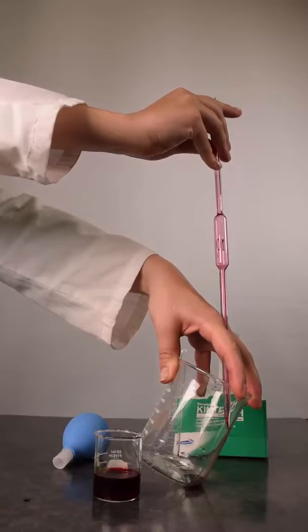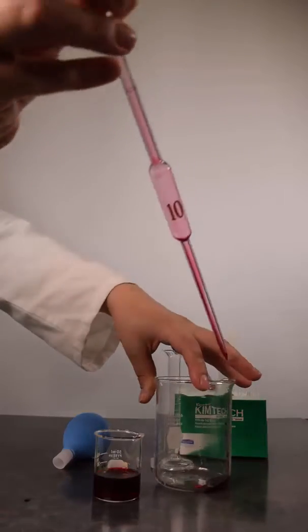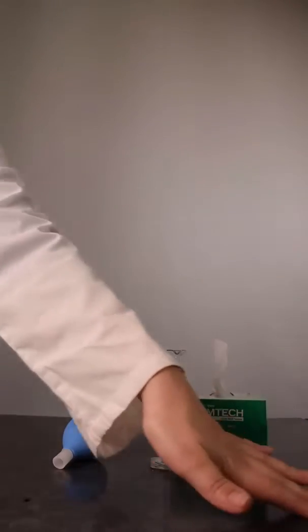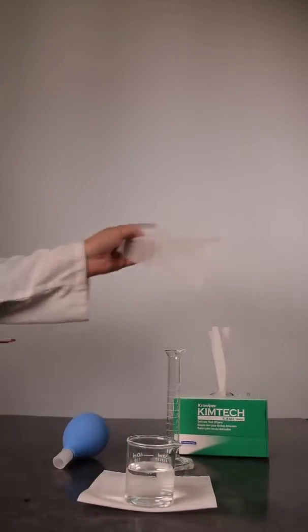We will now demonstrate rinsing this pipette clean with deionized water without contaminating the beaker of water with the dye. We will pour the rinses into a 10 milliliter graduated cylinder to show the total volume of rinses.